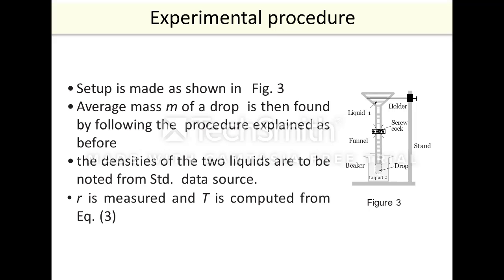Experimental procedure: Setup is made as shown in figure 3. Average mass m of a drop is then found by following the procedure explained as before. The densities of the two liquids are to be noted from standard data source. R is measured and T is computed from equation 3.